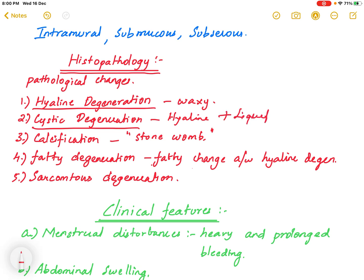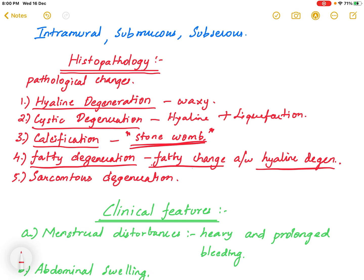Calcification of fibroids is most commonly seen in post-menopausal females and is termed 'stone womb.' Fatty degeneration involves fatty change associated with hyaline degeneration. Sarcomatous degeneration is a malignant change and the rarest pathological change — less than 1% of myomas undergo sarcomatous degeneration.